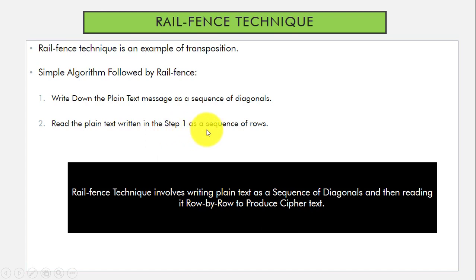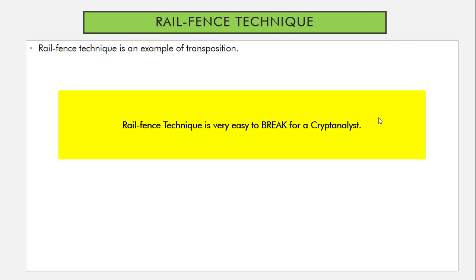So how this technique works, first we will write the plain text as a sequence of diagonals and after that, we will read the message row by row to produce the ciphertext. This technique is not secure because it can be easily broken by cryptanalyst.